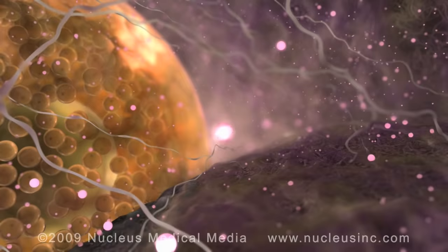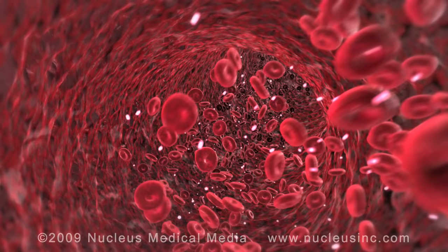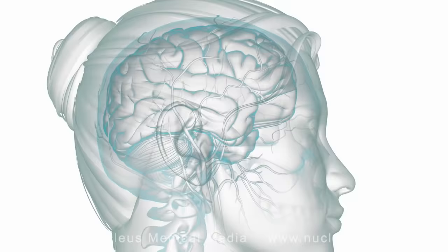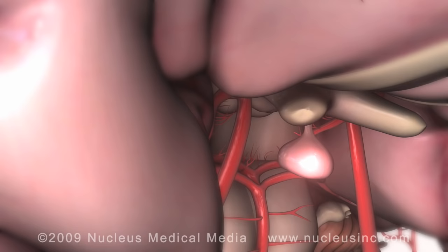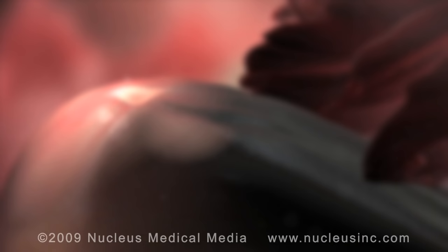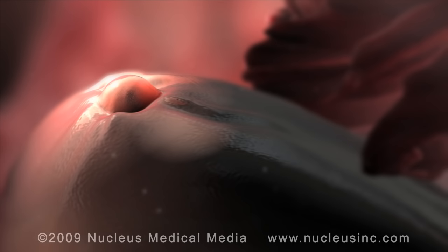Around day 12, the follicle secretes a large amount of estrogen into the bloodstream. When the estrogen reaches the hypothalamus and the pituitary gland in the brain, the anterior, or front part of the pituitary gland, releases a huge surge of luteinizing hormone into the bloodstream.